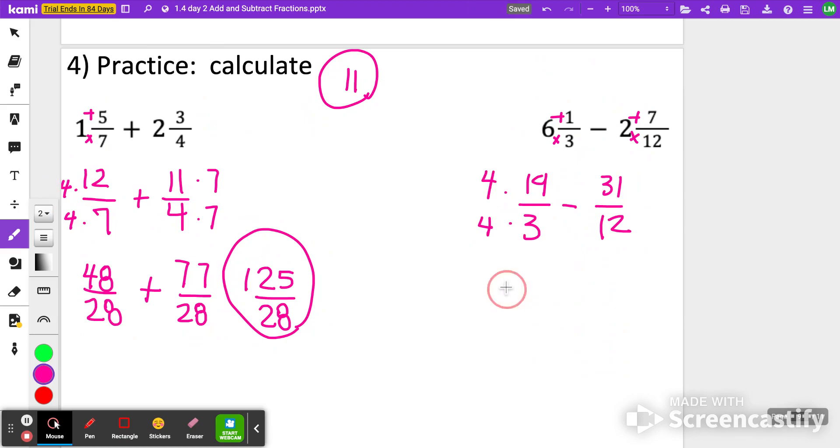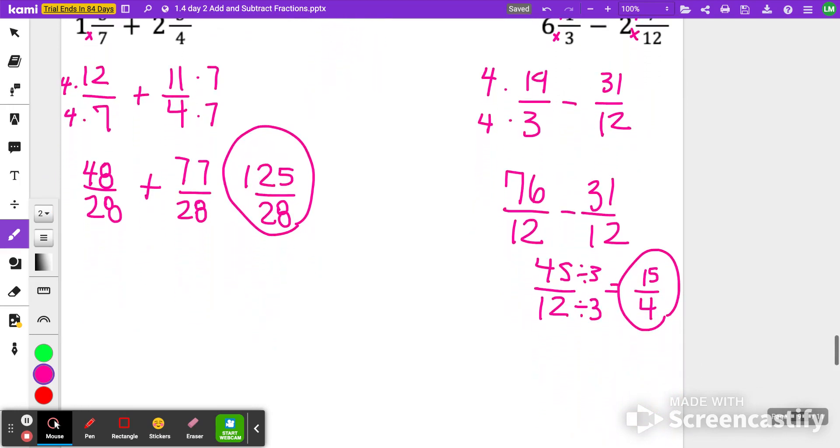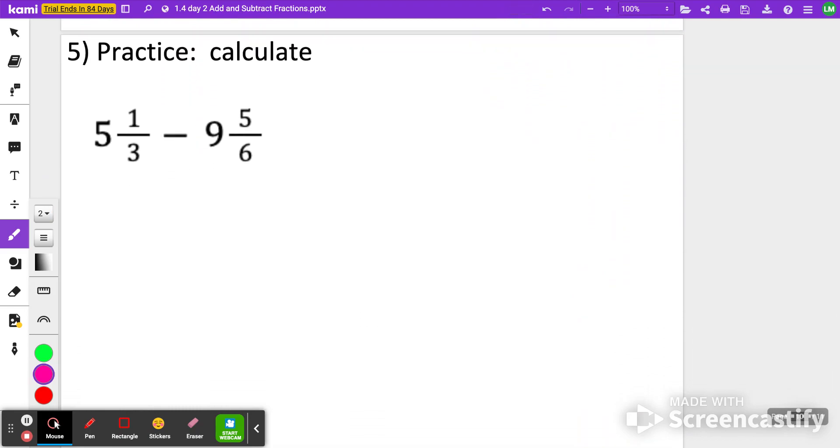So 4 times 19 would be 76. So 76 twelfths minus 31 twelfths. And I'm going to get 45 twelfths. Now here is something that you want to consider. 45 and 12 can be reduced by 3. 3 is that tricky one where you have even and odd multiples. Here, when you reduce it, you're going to get 15 fourths. Again, these could be changed into mixed numbers. I'm just trying to keep it simple and efficient for you so that you don't necessarily always have to change back to mixed numbers.